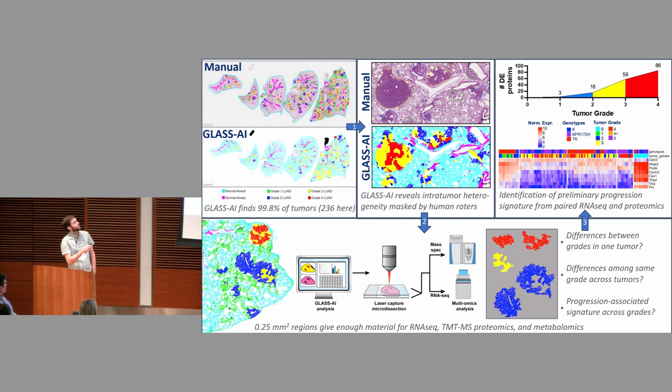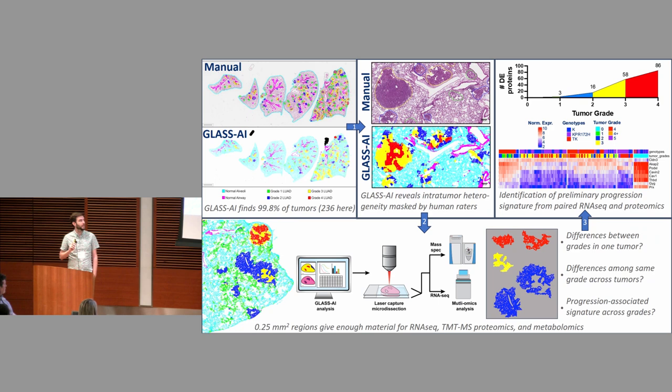We develop a lot of different mouse models to study cancer in a physiological context. Quantifying these mouse models is very arduous — we can specifically induce tumors inside lungs thanks to genetic engineering, but there can be over 200 tumors in a mouse's lung. Analyzing one slide took me about three hours, with two more slides to go. After doing this a couple of times, I thought there had to be a better way, so I recruited clinical pathologists and set out to develop GLASS-AI — Grading of Lung Adenocarcinomas with Simultaneous Segmentation by Artificial Intelligence.